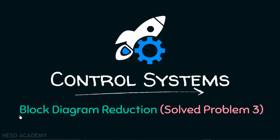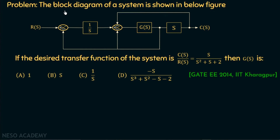In this presentation, we are going to discuss problem number 3 on block diagram reduction. The block diagram of a system is shown in the figure. A block diagram representation is given in the problem. If the desired transfer function of the system is C(s) over R(s) equal to s over s squared plus s plus 2, then G(s) is. We are given 4 options and we need to select one. This problem was asked in Gate Electrical 2014 given by IIT Kharagpur.